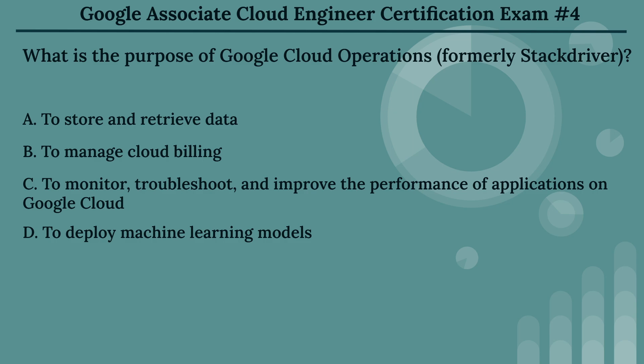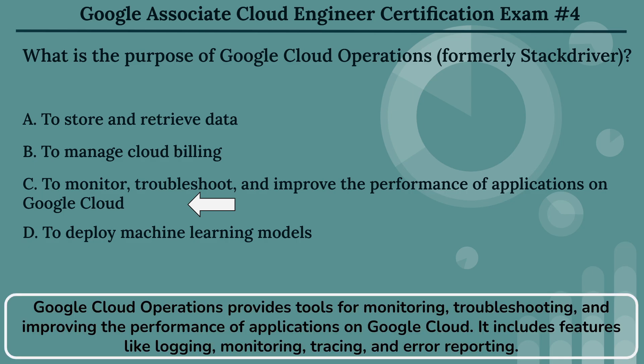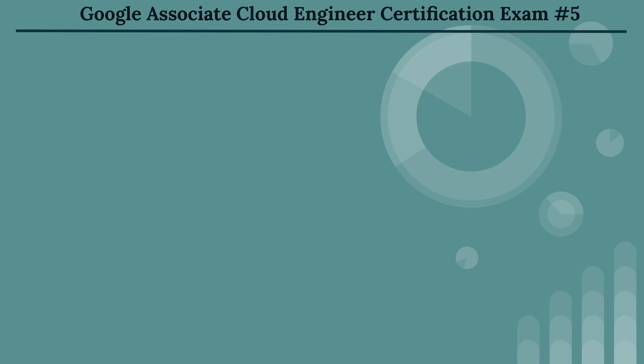The right answer is Option C: to monitor, troubleshoot, and improve the performance of applications on Google Cloud. Google Cloud Operations provides tools for monitoring, troubleshooting, and improving the performance of applications on Google Cloud. It includes features like logging, monitoring, tracing, and error reporting.